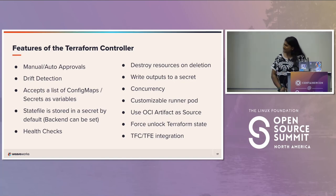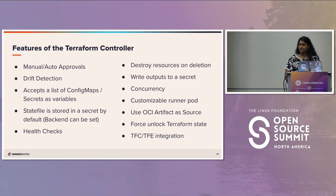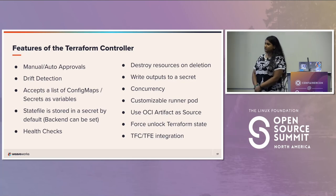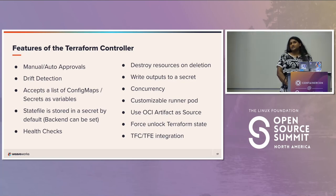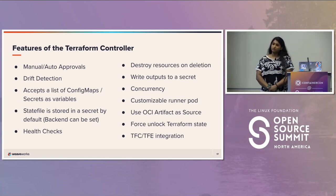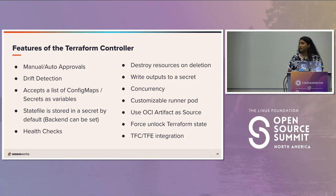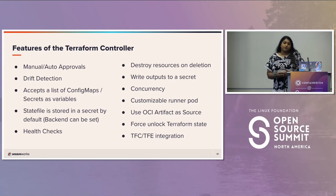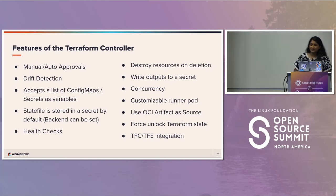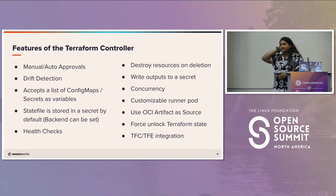The most exciting thing that's more recently come out of the Terraform controller is concurrency — it now uses runner pods. They tested it with around 1,500 concurrent modules and it handled it very well. You can customize the runner pod image and set how many runner pods you want to run concurrently. Just like Flux, you can use OCI artifacts as a source. It also has the ability to force unlock Terraform state, and there's integration built in for Terraform Cloud and TFE.